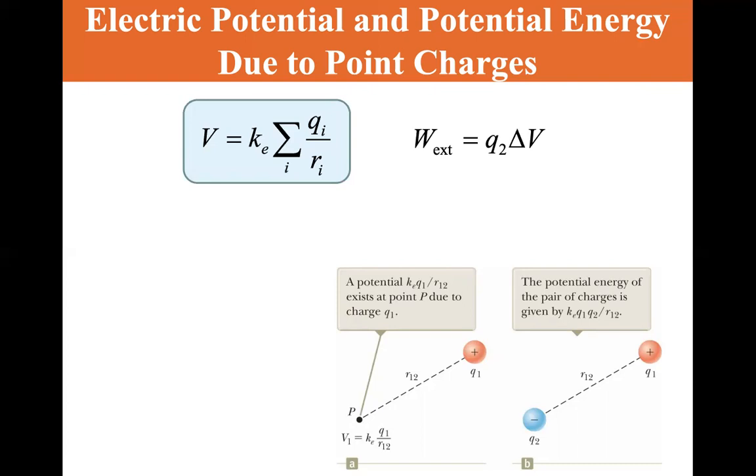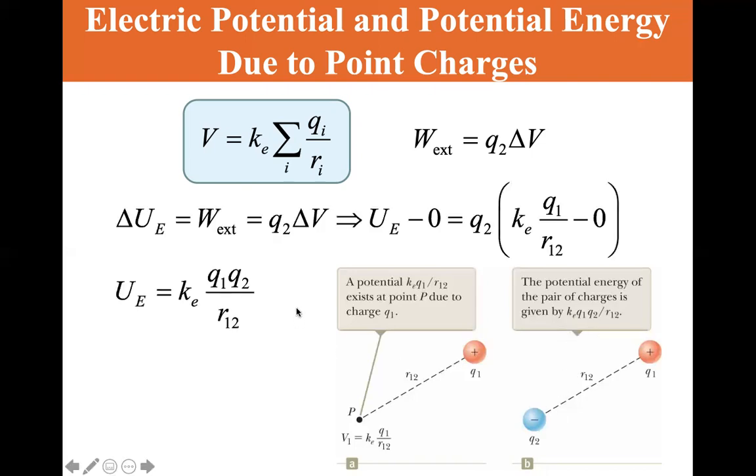The external work is equal to q₂ times delta V. So let's read the boxes here. Potential kₑ q₁ over r₁₂ exists at point P due to charge q₁. So there is a potential here and it's only due to this one. The potential energy of the pair of charges is given by kₑ q₁ q₂ over r₁₂, where r₁₂ is the distance between them.